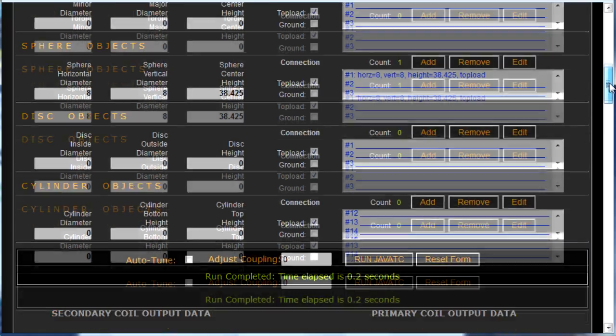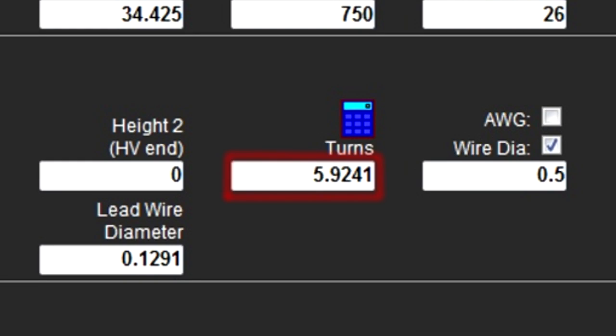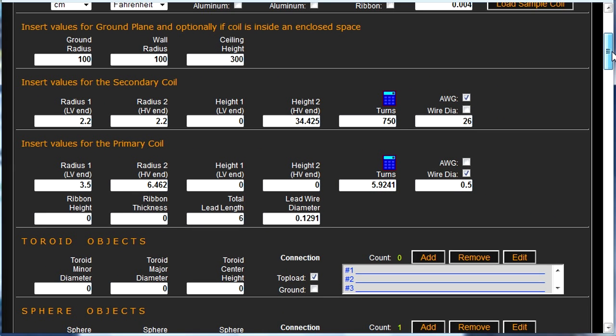Scrolling up, you can see that the calculator figured that to get that, I need 5.9241 turns. Pretty close to the 6 turns I'd requested.